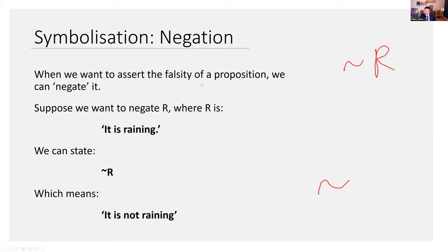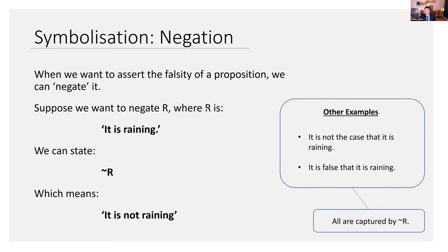Not R in English might have several different forms. There might be things that convey not R other than it is not raining. You might say it is not the case that it is raining. That's still not R. You might say it is false that it is raining. That's still not R.